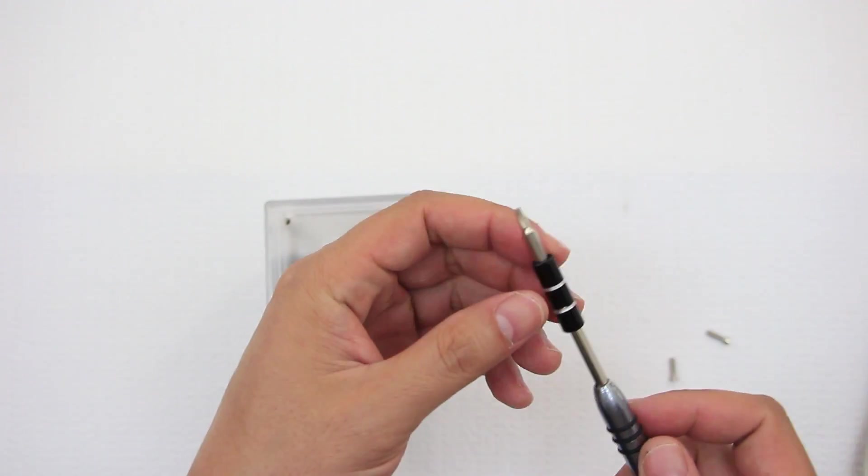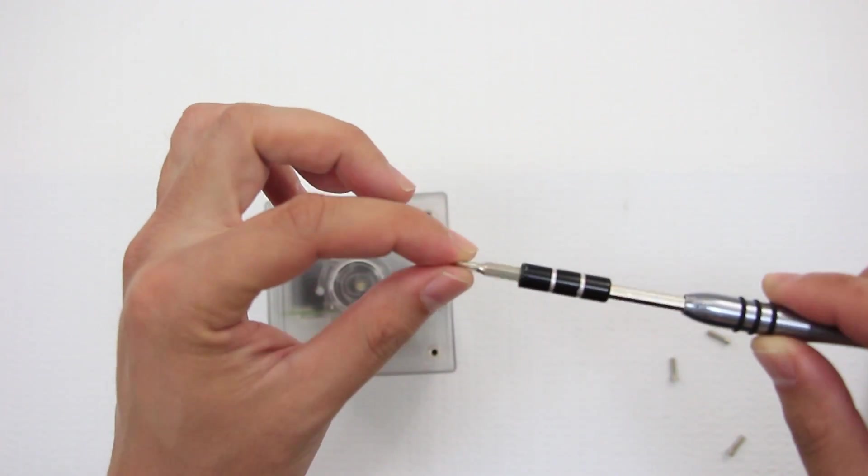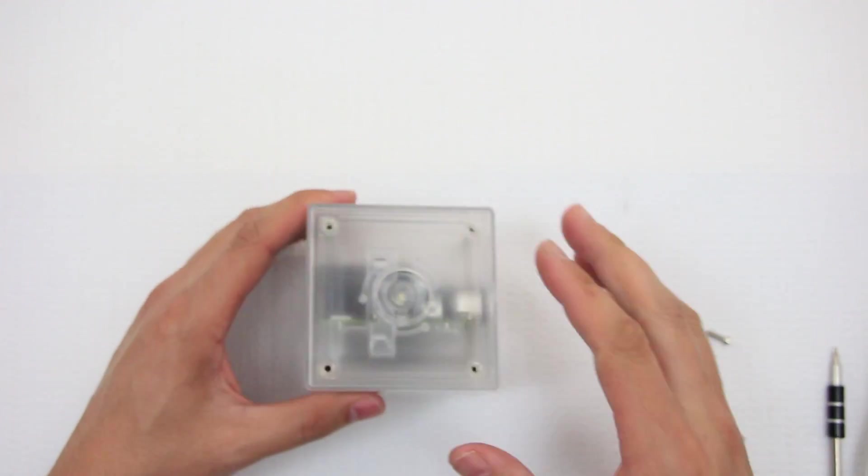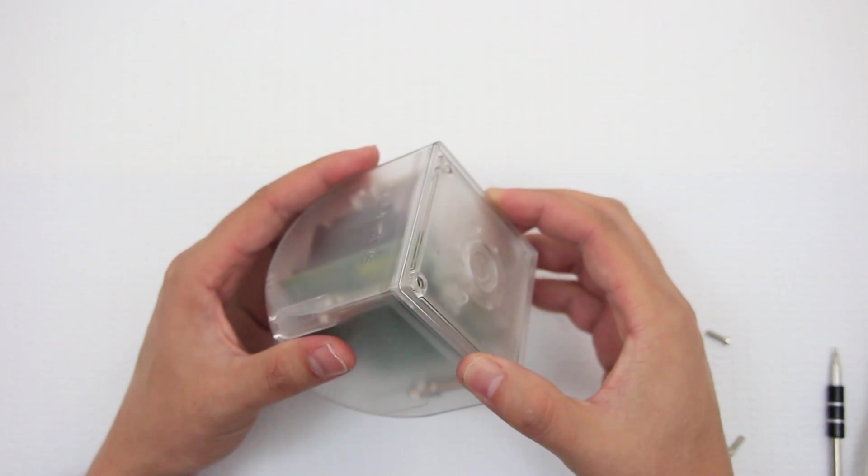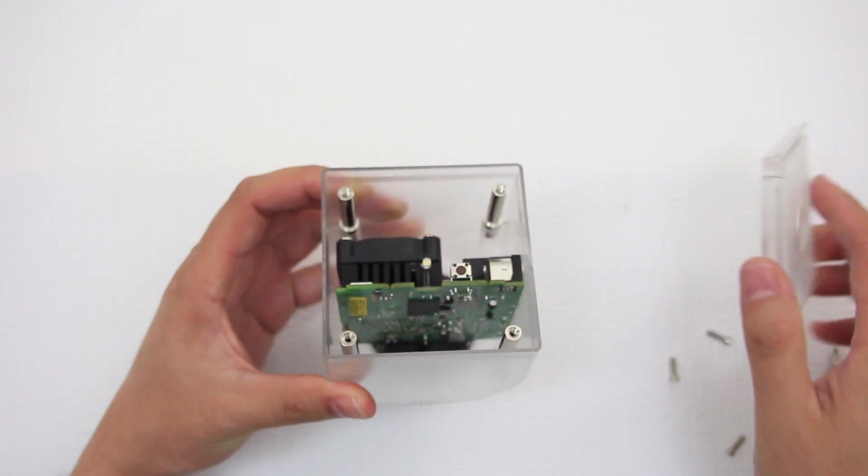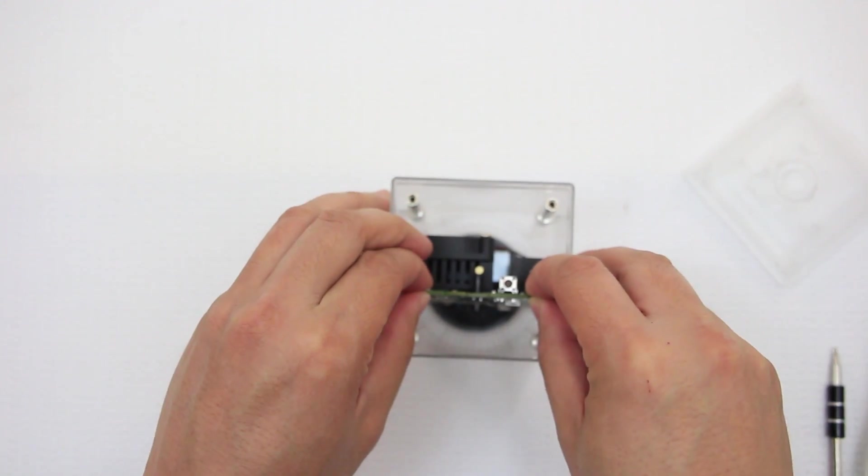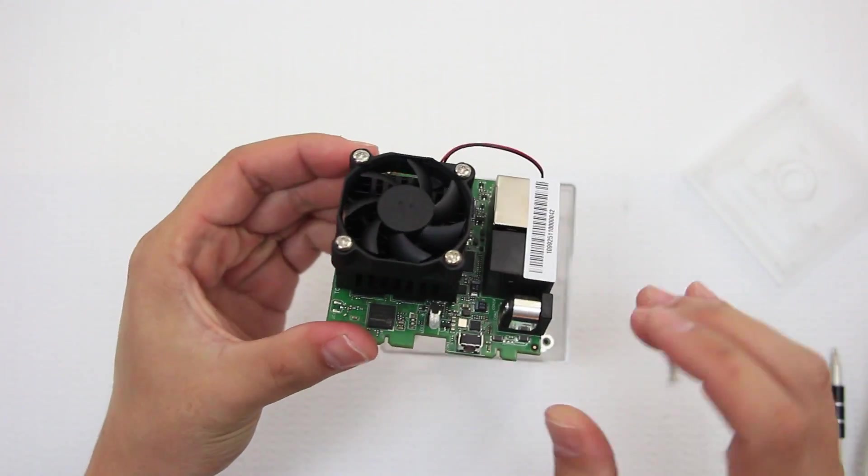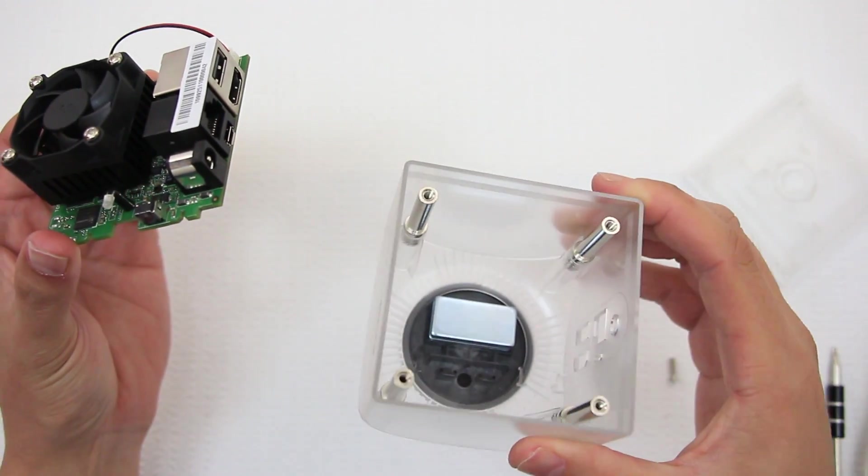In case some of you are wondering, this is a standard T8 size torque screw, nothing fancy. So let's go ahead and open this up. The lid comes off of there. And then this pretty much just pulls straight out like so. And there you have it. There's the inside.